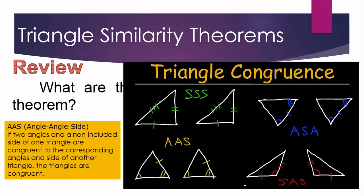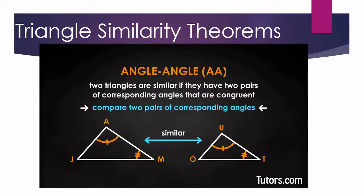So now, let us discuss the different triangle similarity theorems. We have the angle-angle or the AA similarity theorem. It states that two triangles are similar if they have two pairs of corresponding angles that are congruent. So if two angles of one triangle are congruent to the corresponding angles of another triangle, then the two triangles are similar.